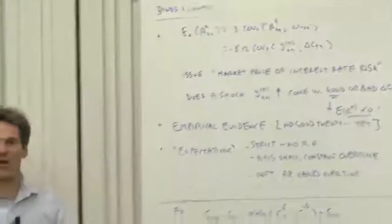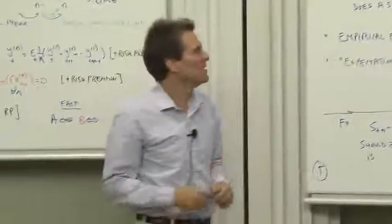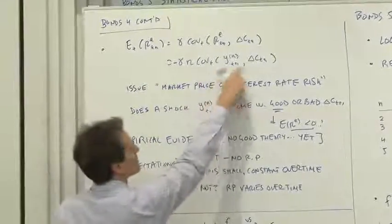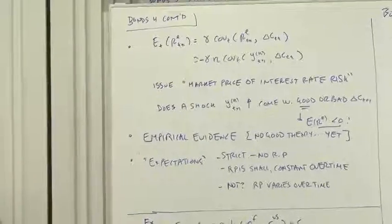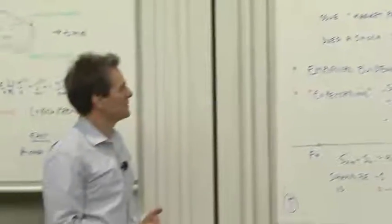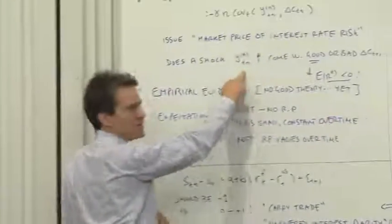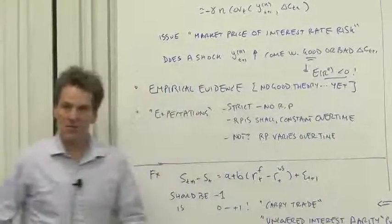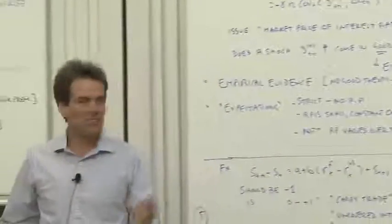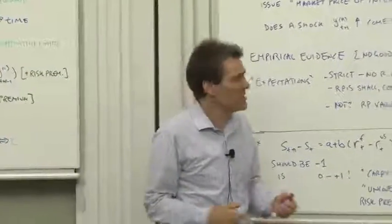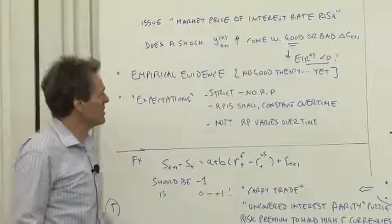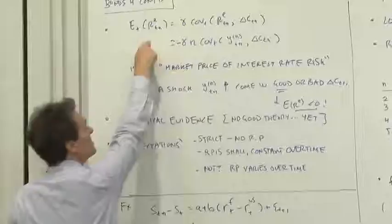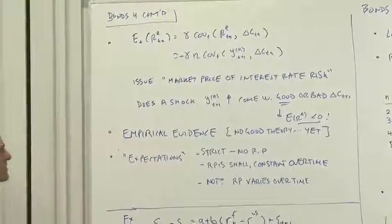It should be bigger for longer maturities bonds. So the issue is, in finance lingo, what is the market price of interest rate risk? Interest rate risk is the chance that interest rates go up or down, and it carries a market price and expected return if it's correlated with consumption growth or all the factors that matter. Put another way, does a shock to interest rates, interest rates going unexpectedly up, does that tend to come with good or bad consumption growth news? Well, if I just look at the data, it seems to come with good consumption growth news, right? Interest rates will go up if we get out of the recession, so that a guess would be that these are positively correlated, hence, again, a negative risk premium for long-term bonds. Well, that's empirical.